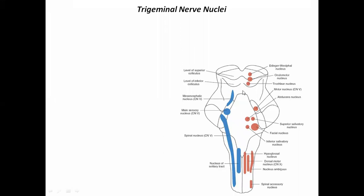Other nuclei are also visible in the brainstem diagram. For example, the trochlear nucleus is located in the midbrain, and the trochlear nerve arises from that nucleus. This illustrates how cranial nerves are connected to their respective nuclei in the brainstem.